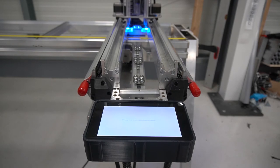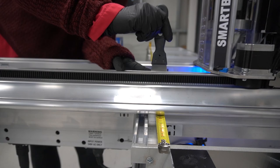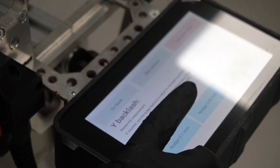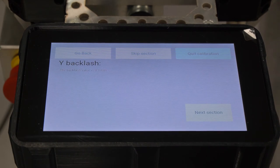The axis will be moved backwards and forwards attempting to return to the same point. Repeat your measurement, this time using the nudge buttons to return to the exact same position. Pressing OK will tell you the backlash value.